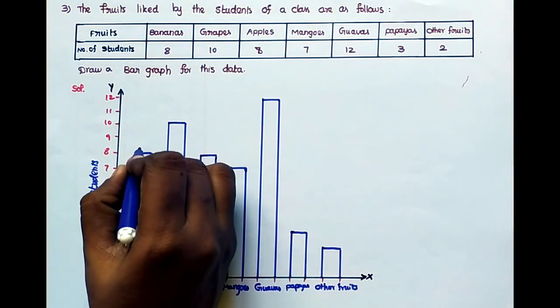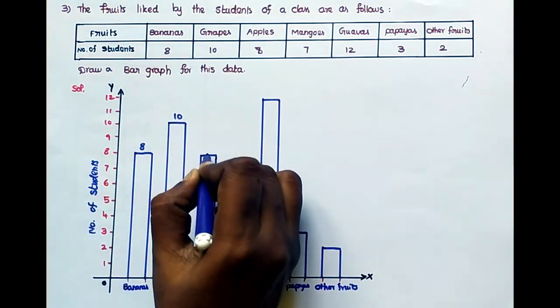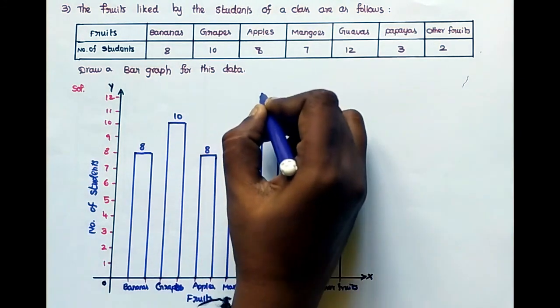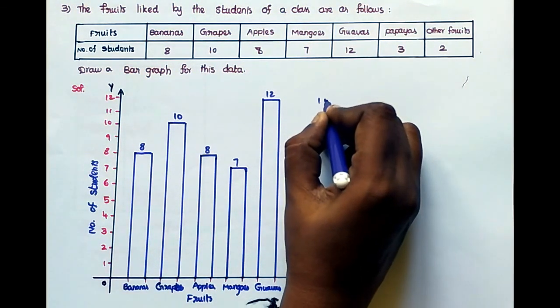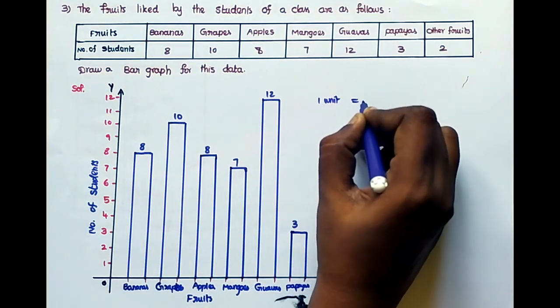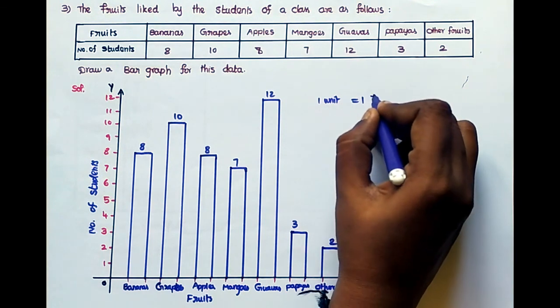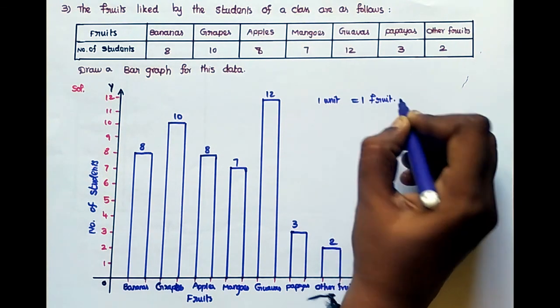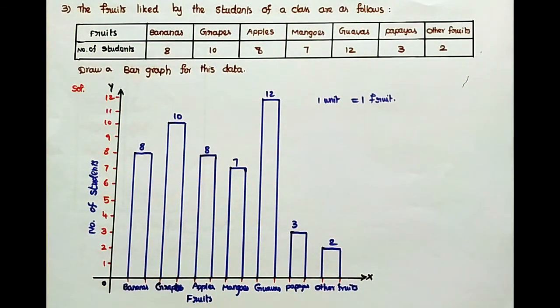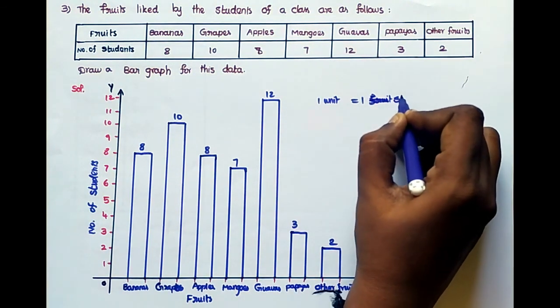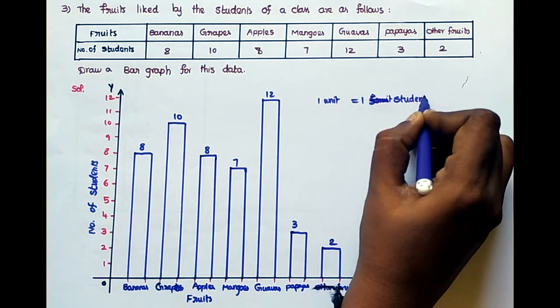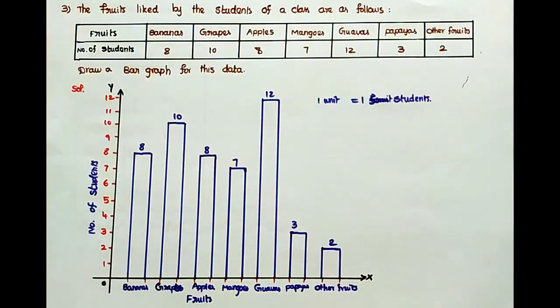Write down the numbers: 8, 10, 8, 7, 12, 3, 2. Here, one unit equal to one student. That is the answer.